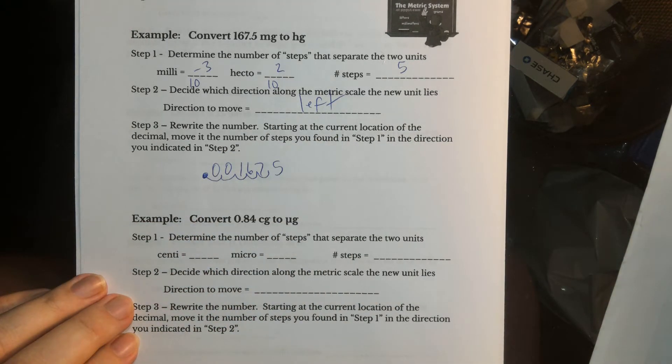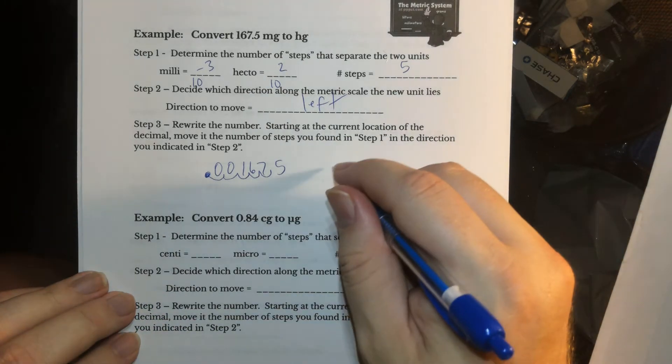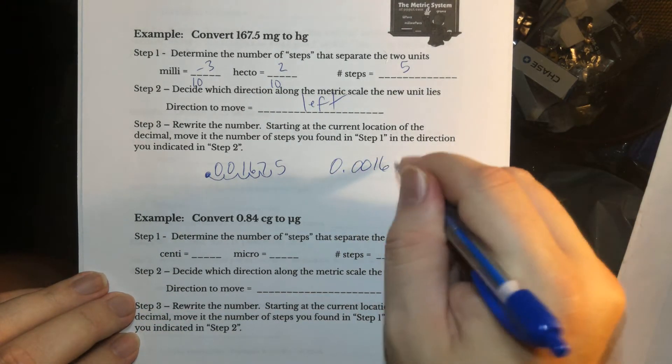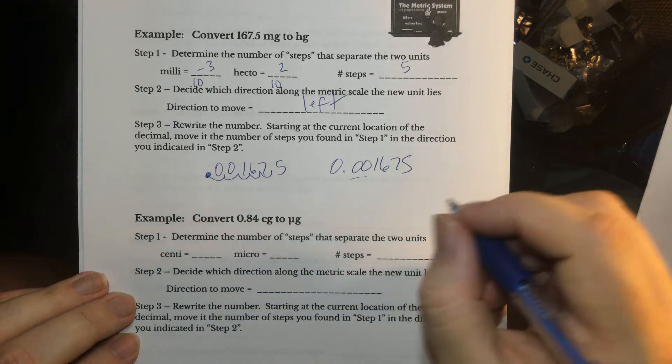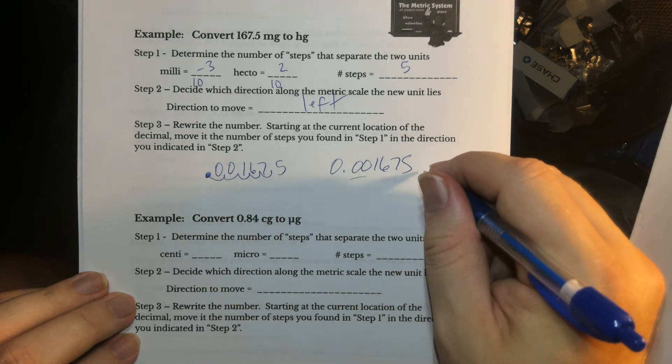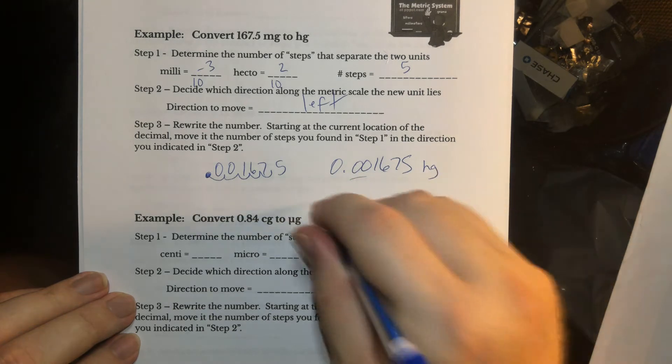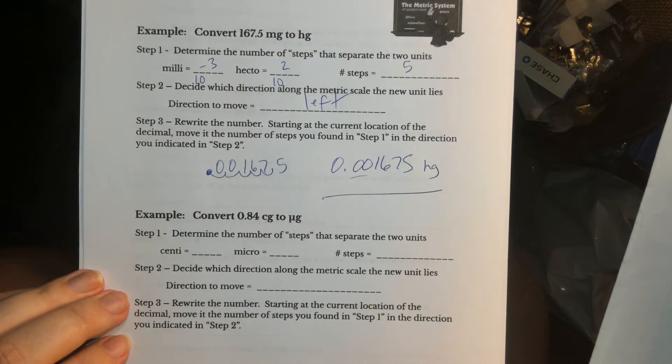Put two zeros in those empty baskets, and we can rewrite that for neatness, 0.001675. Keep these two zeros here, because those are placeholders, you have four sig figs in this answer. Hectograms.